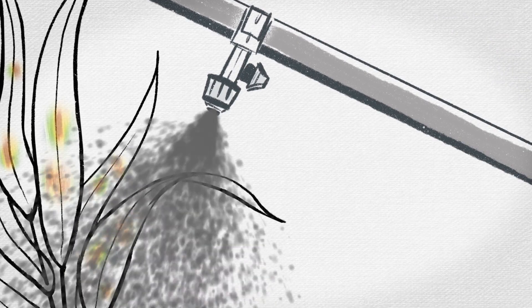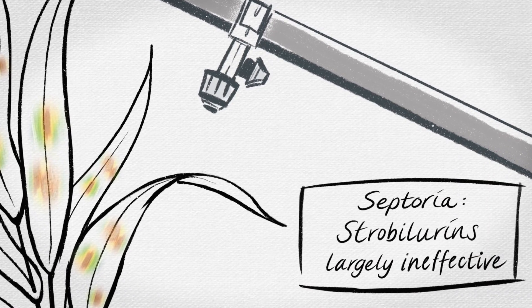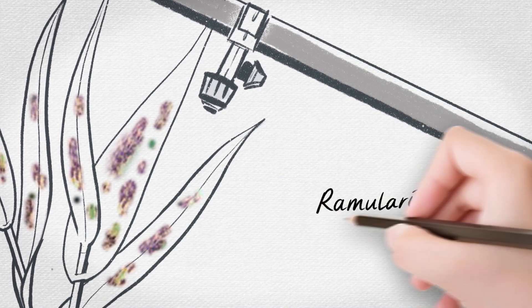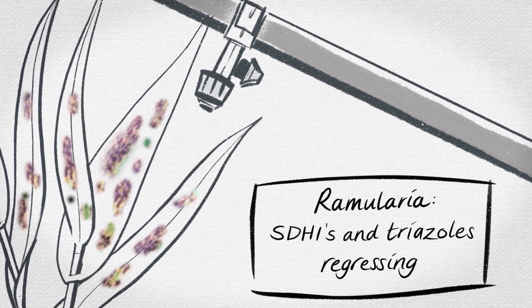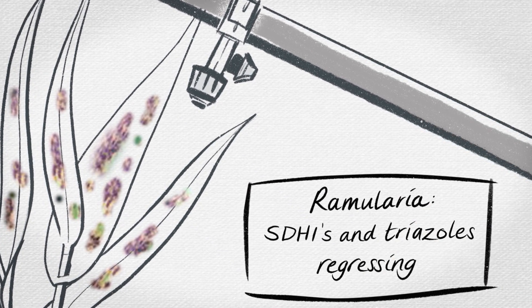In wheat, this erosion of efficacy has rendered strobilurin fungicides largely ineffective against septoria. In barley, the ramularia fungus has also developed widespread resistance with strobilurins ineffective and the efficacy of triazole and SDHI fungicides also regressing.